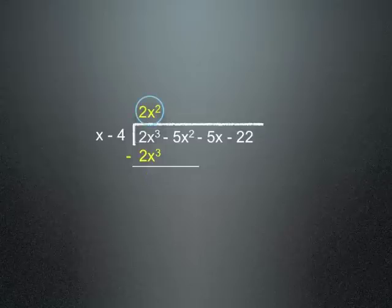Now we're gonna take 2x squared times negative 4 and we're gonna put it right there. And that equals negative 8x squared. Let me put parentheses around that and that's negative 2x cubed minus 8x squared which is equal to negative 2x cubed plus 8x squared. Negative 5x squared plus 8x squared is 3x squared.